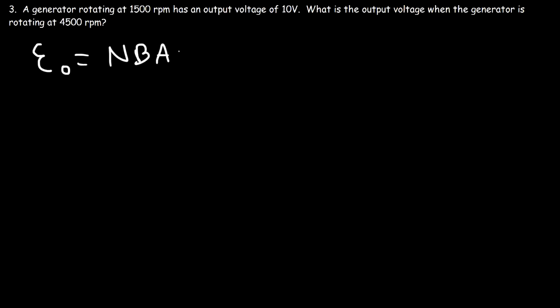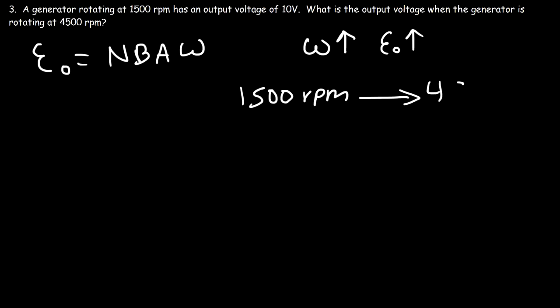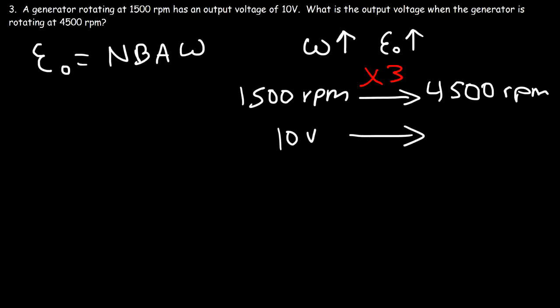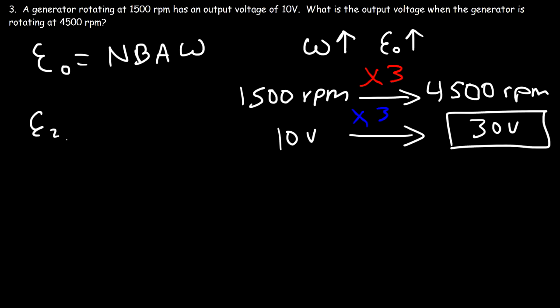Problem three: a generator rotating at 1500 RPM has an output voltage of 10 volts. What is the output voltage when rotating at 4500 RPM? Using the formula E = N·B·A·ω, increasing the angular speed increases the output voltage proportionally. Since 4500 is 3 times 1500, we're increasing by a factor of 3, so the voltage increases from 10 to 30 volts.